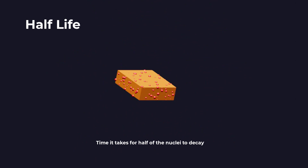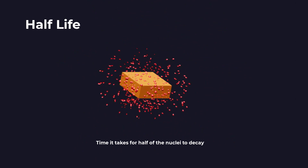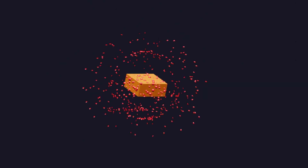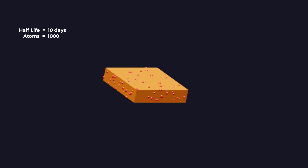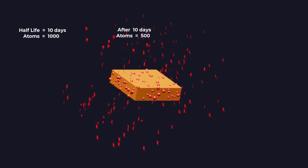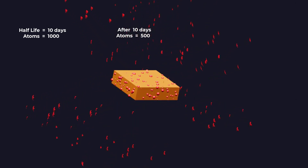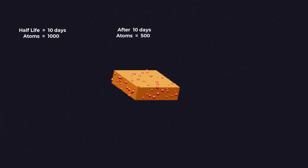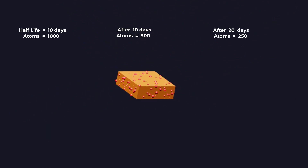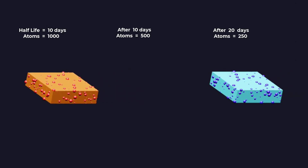The time it takes for half of the atoms in a sample to decay is called half-life. For example, if a sample has a half-life of 10 days and starts with 1000 radioactive atoms, after 10 days there will be 500 radioactive atoms remaining. After another 10 days, there will be 250 radioactive atoms, and so on.